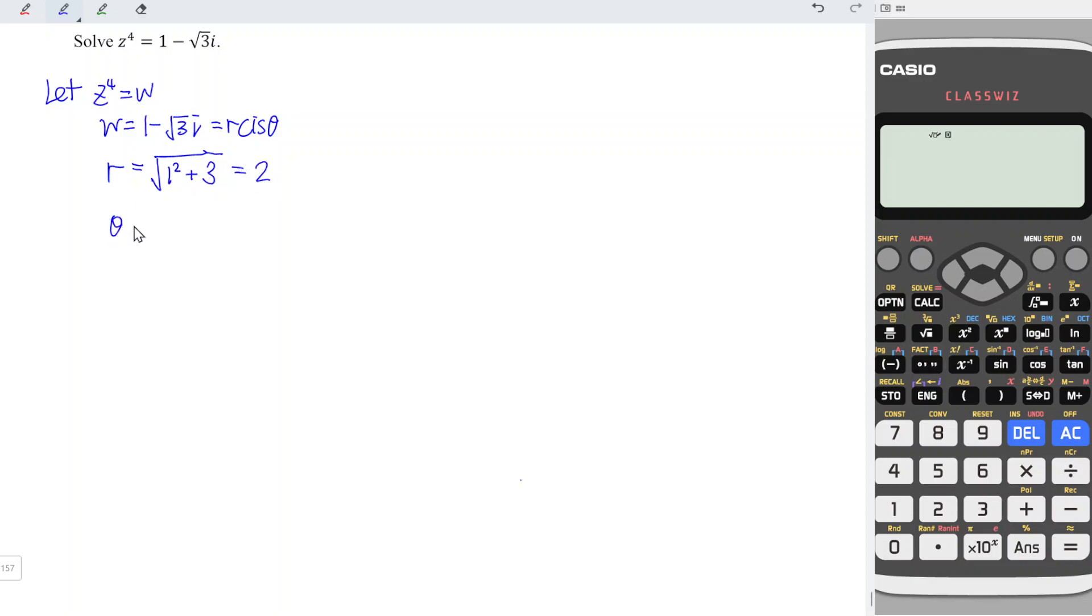And for the theta, it's simply the argument, which is arctan of y divided by x. So we have negative square root of 3 divided by 1. When we enter into the calculator, we can ignore the negative sign first, since what we need here is just the reference angle. So we press shift tangent to obtain arctan, and we press square root of 3. And this is equal to 60 degrees.